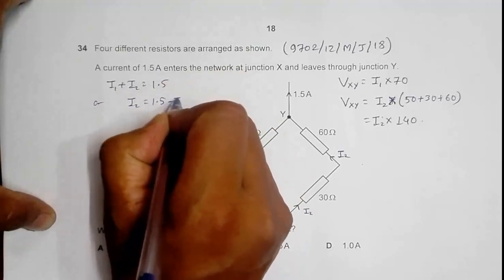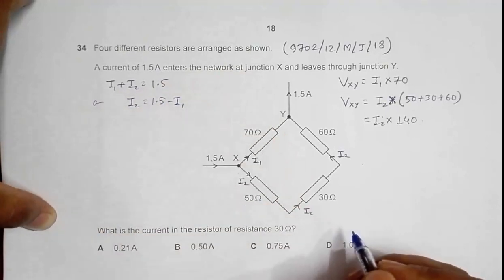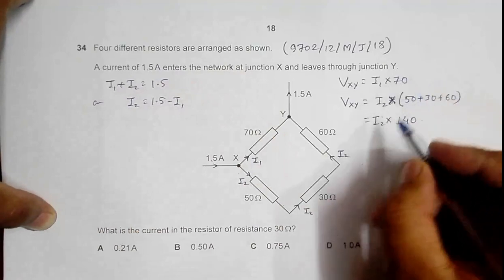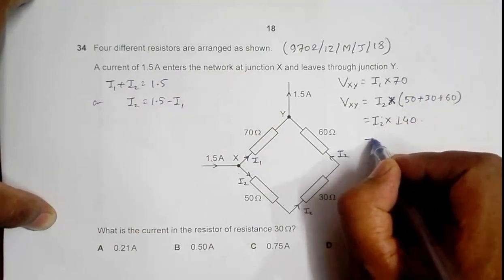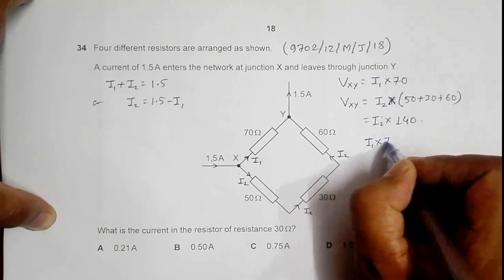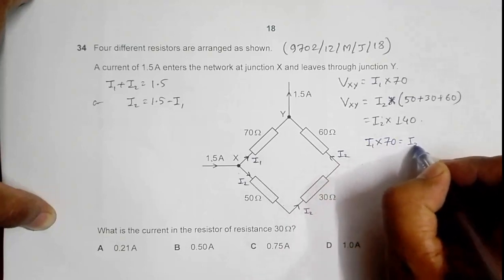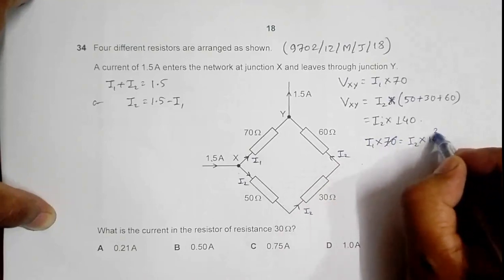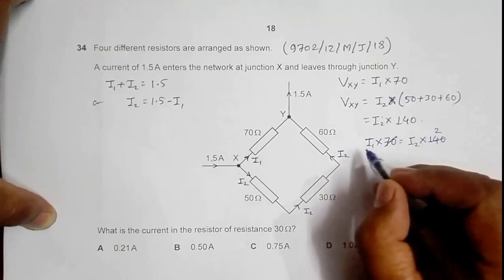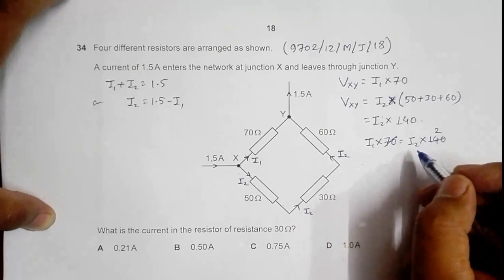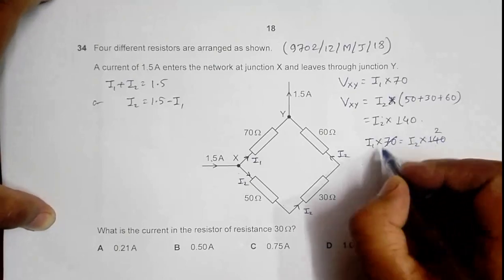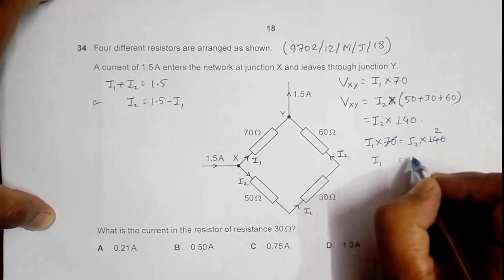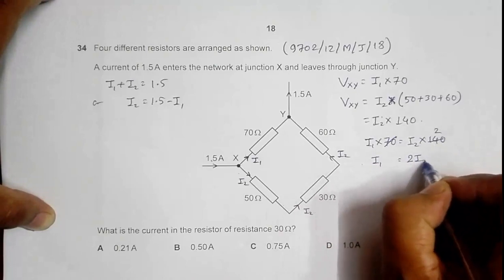Which gives me I2 equals 1.5 minus I1. Now if I equate these two, I'll have I1 into 70 equals I2 into 140, which gives me I1 equals 2 I2.